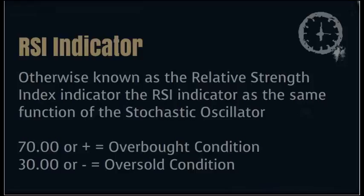The thing that all oscillating indicators have in common is that they oscillate between two values. Oftentimes these values range from negative 20 to 100, but more commonly you will see 0.00 to 100.00 levels. When using our RSI indicator to determine whether our asset is being overbought or oversold, we look at the value that our RSI indicator is reflecting.